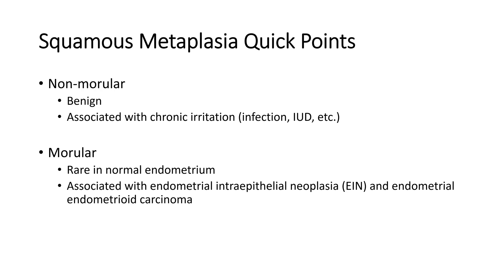To sum up squamous metaplasia: remember there are two types. Non-morular metaplasia is typically associated with benign processes — chronic irritation, infection, IUD use, etc. Morular metaplasia forms these morules or rounded balls; it's not usually seen in normal endometrium, so if you see it, look closely and evaluate the nearby glands to see if you can find an EIN or an endometrioid carcinoma that could be associated with it.